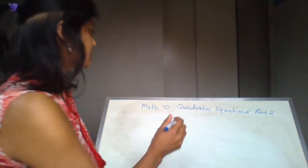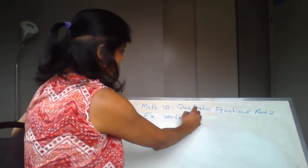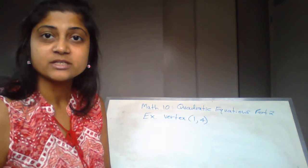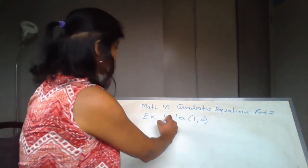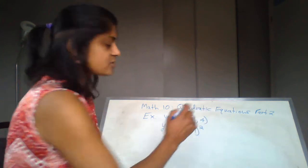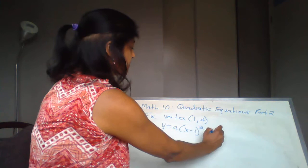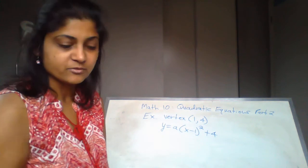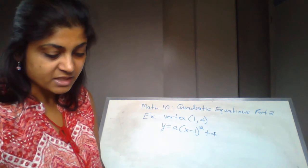The question says: find the equation of the parabola with the vertex of (1, 4). The vertex is (1, 4), and when you're looking for the equation of the quadratic, you have to put it into the vertex form. So it's going to be y = a(x - 1)² — make sure you are changing the sign for the x-coordinate of the vertex — and then plus 4.